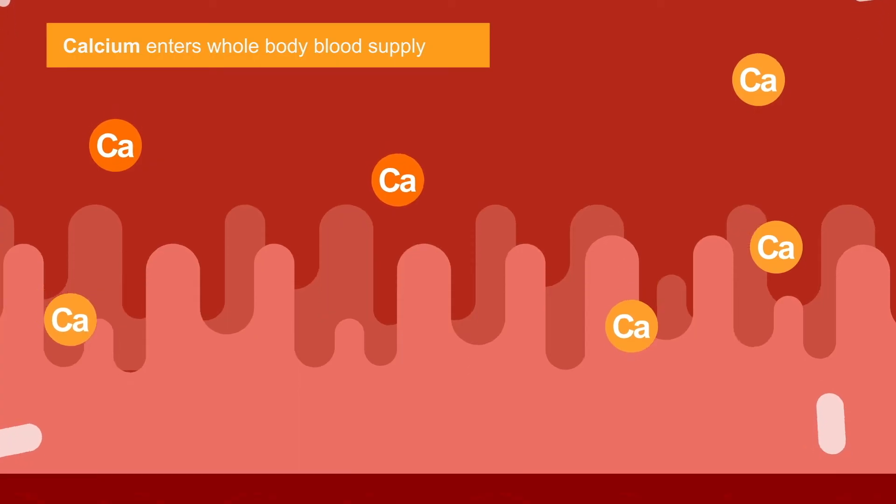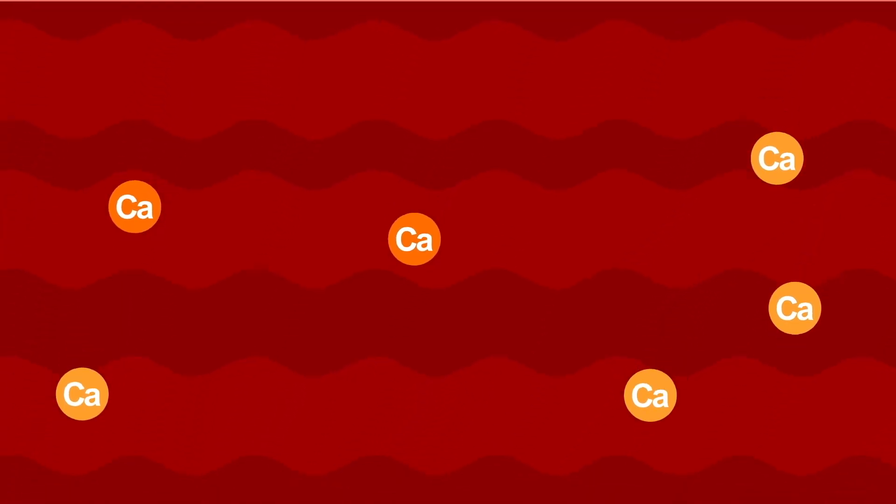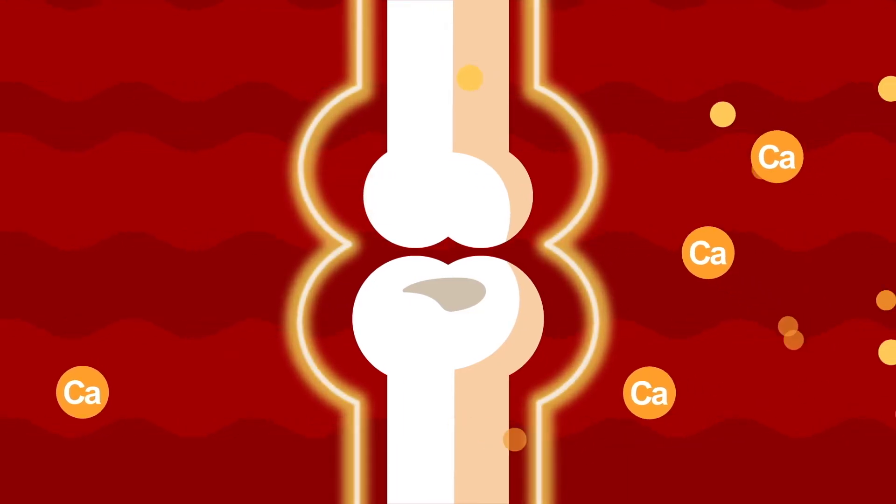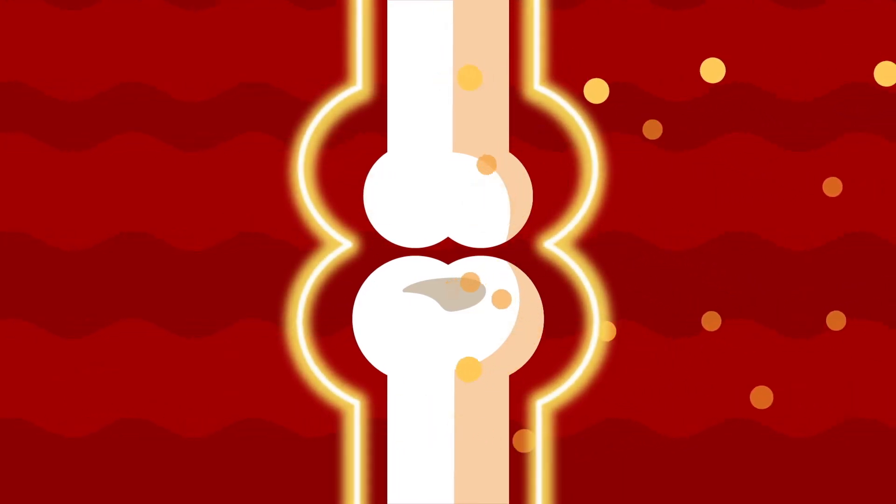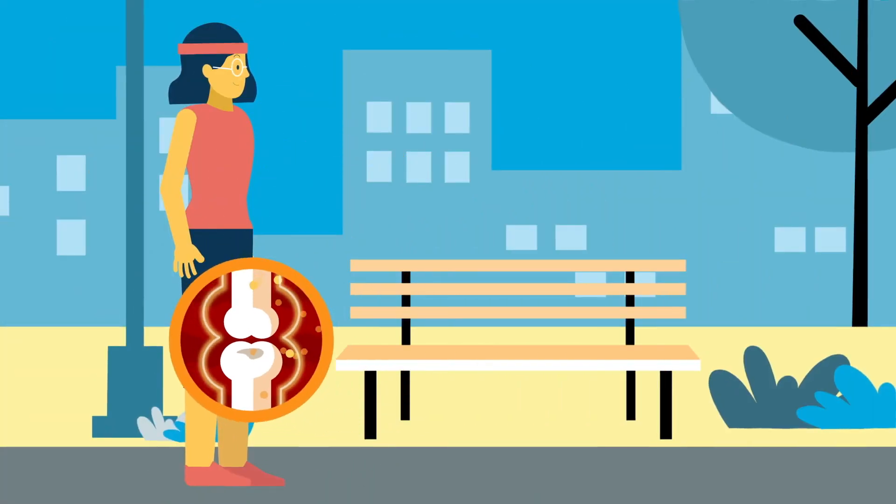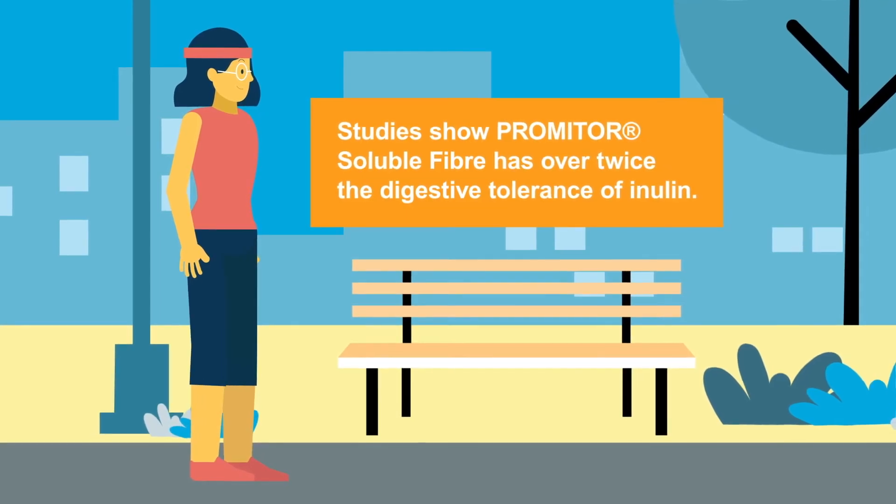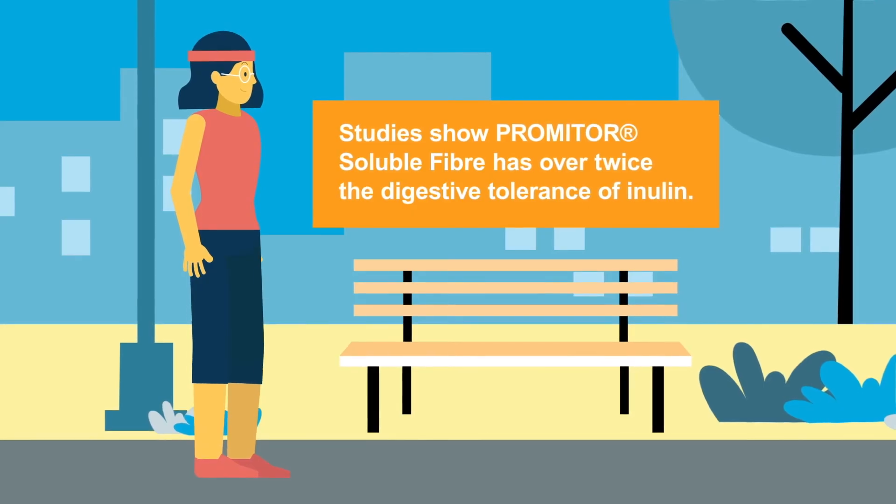Studies show that Promitor Soluble Fibre helps to enhance calcium absorption in teenage boys and girls, and supports bone calcium retention in women after menopause. Human studies have also shown Promitor Soluble Fibre has excellent gastrointestinal tolerance.